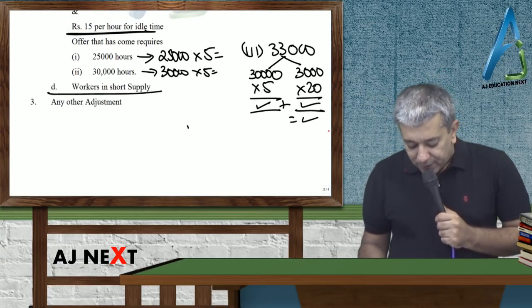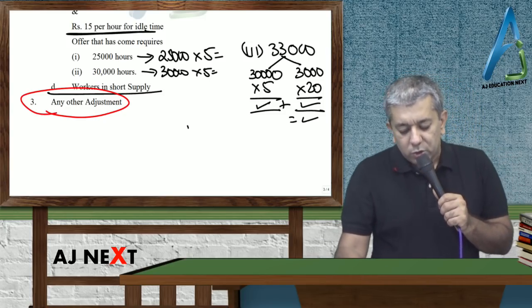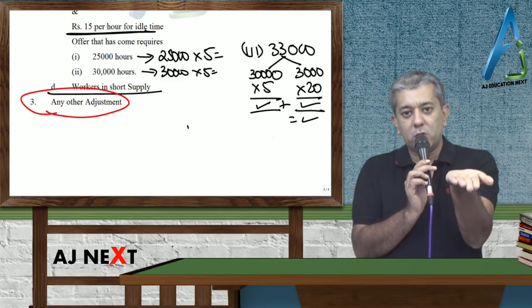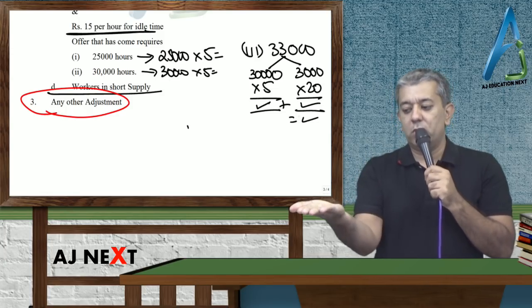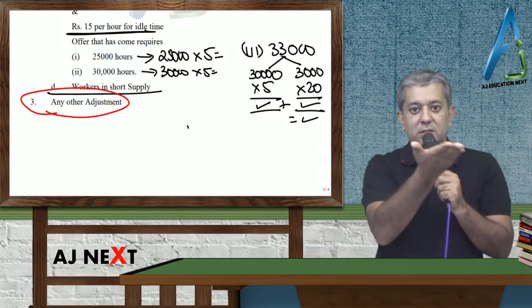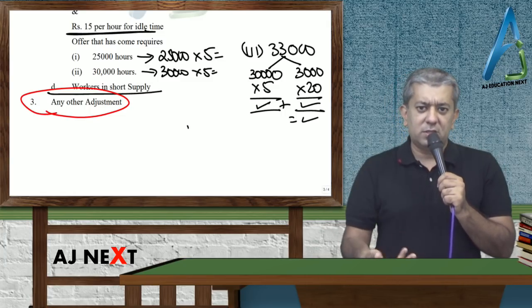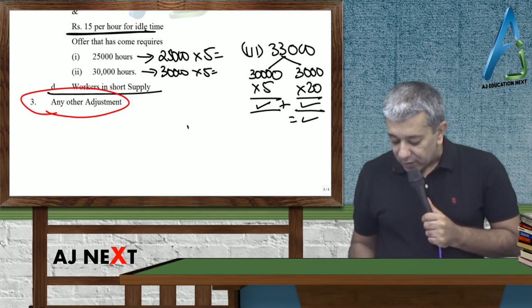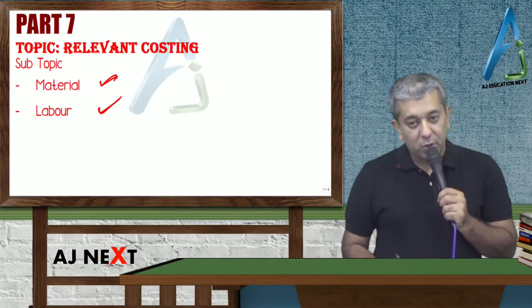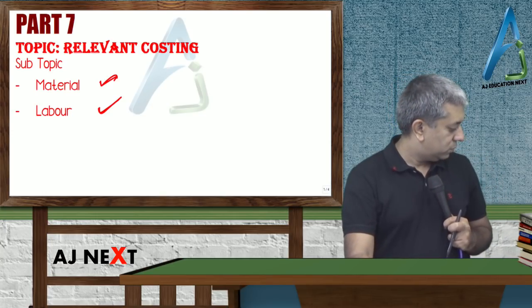This is labor done. But if any other adjustment comes for labor, it could be any adjustment. So just think. If the offer doesn't come, how much would the labor cost be? Then think, now if the offer comes, how much will the labor cost be? Difference between this answer and this answer will be giving you your correct answer as such. In the cases we just did, we did the same thing. So we all have started with relevant costing now. We all have done material and labor. All other adjustments in your next lecture. I'll see you all in the next lecture.